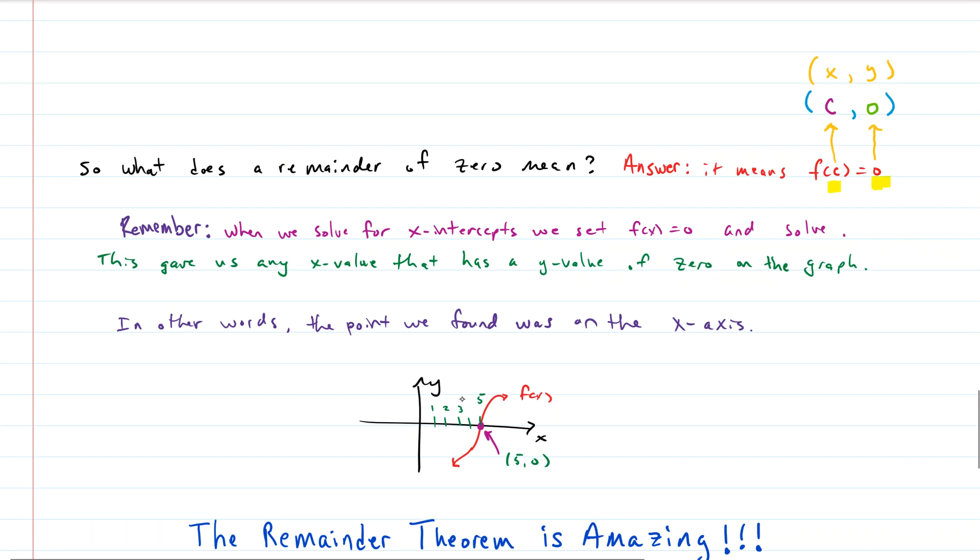And we know what that means, right? What is that? This is an x-y coordinate pair, right? x-y. The c is the x, and that constant's the x, and the y is the 0. So that's just like this picture with some number and then 0, which means you're on the x-axis.